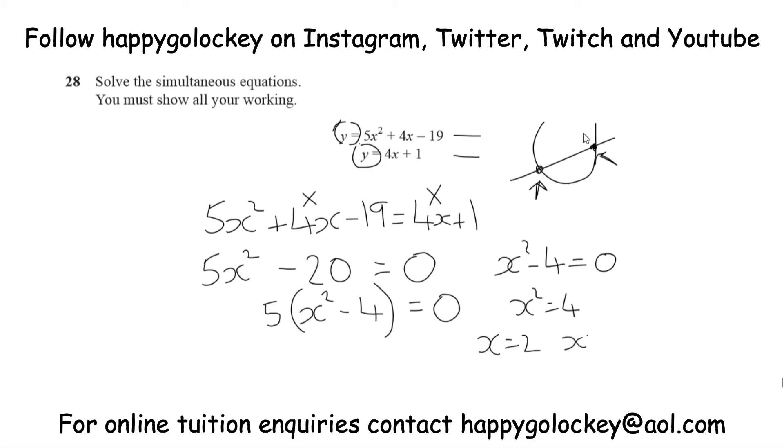But also x can be negative 2, because negative 2 multiplied by negative 2 would also give you positive 4. So there's our two x values, 2 and minus 2.